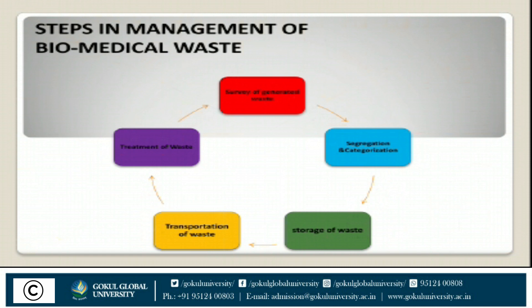The steps in the management of biomedical waste are divided into five types: survey of generated waste, segregation and categorization, storage of waste, transportation of waste, and treatment of waste. First, we have to survey the hospital to identify where waste is generated — like wards, storerooms, and pathology labs. Then we segregate and categorize the waste, classifying it as infectious, pharmaceutical, pathological, chemical, or radioactive.